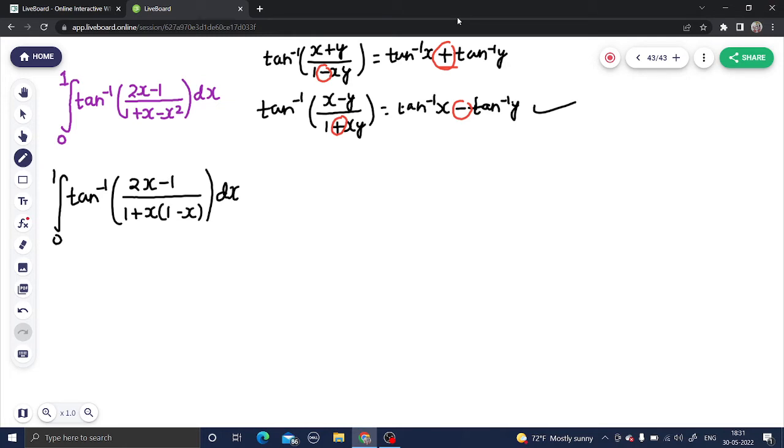Now with the help of this x and this 1 minus x, we have to write this numerator so that we can use the formula. How can we make 2x minus 1 from x and 1 minus x? It's simple because you know that the sign here will be minus. So what we can do is tan inverse 2x minus 1.